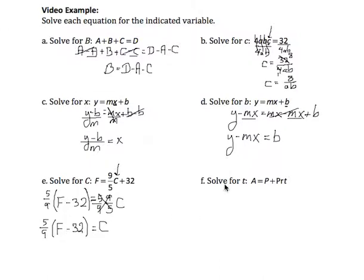Part F, I'm asked to solve for T inside the equation A equals P plus PRT. So T is here. I am going to first subtract P from both sides. And that's because I'm going to first move this P. So that's P minus P plus PRT. So P minus P goes to zero. So I'm left with A minus P equals PRT.